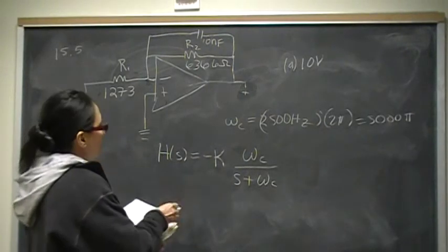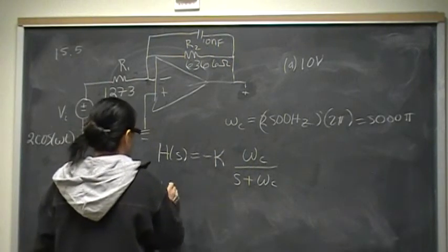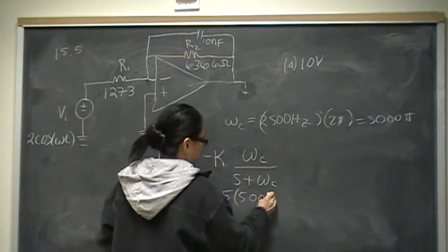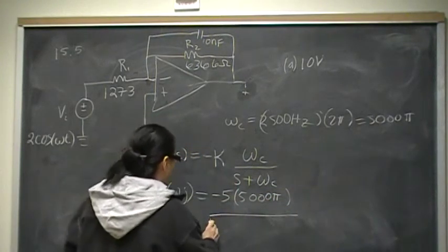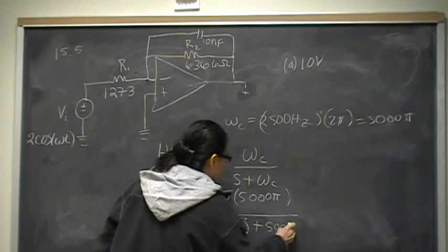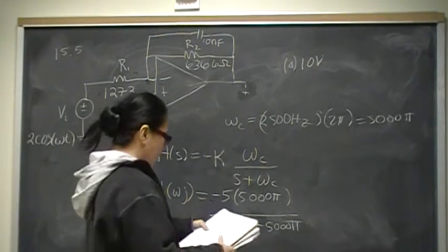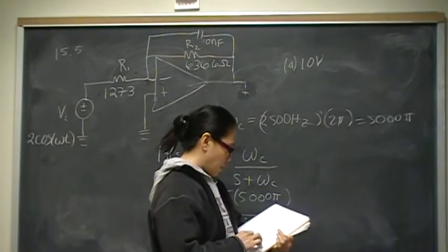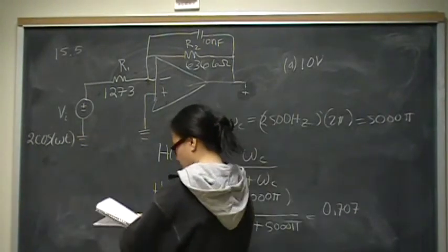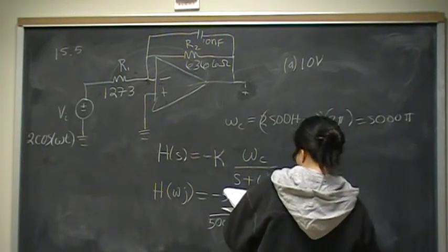Now we want to look at what is going to pass through at the cutoff frequency. The cutoff frequency is 5,000 pi, so we evaluate H of j·omega: negative 5 times 5,000 pi, divided by 5,000 pi·j plus 5,000 pi. Put that into your calculator and you should get 5√2/2 at an angle of 135 degrees.